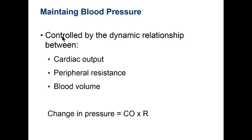Afterload is related to peripheral resistance — what the heart has to overcome when pumping. Increased peripheral resistance increases blood pressure. Blood volume also increases blood pressure — the more volume in the vessels, the more pressure. These are questions you'd see on a test — if given one factor, can you predict how it affects the others?